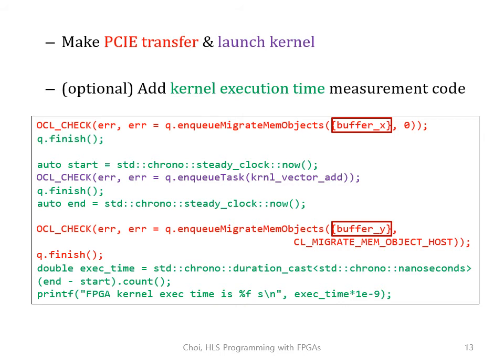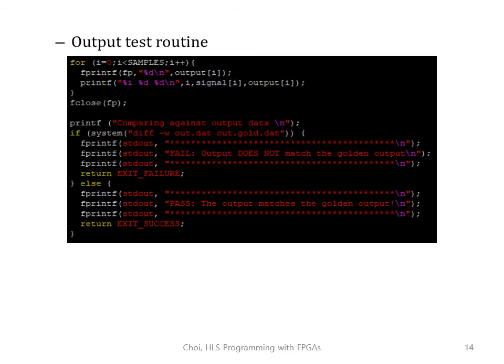One thing to be careful about: enqueuing a task does not mean it executes right away. So even after enqueuing a PCIe transfer, we can't be sure it has finished. That's why I place a queue.finish() before measuring the kernel start time — to ensure the PCIe transfer has completed. Similarly, I place queue.finish() before measuring the kernel end time to wait until the kernel has finished execution. Once done, save and close the host file.